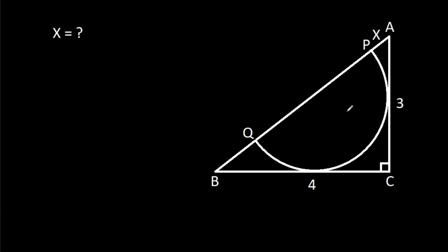In this video, we have been given a semicircle inside a right angle triangle, where BC is 4, AC is 3, and AP is X. We have to find X.